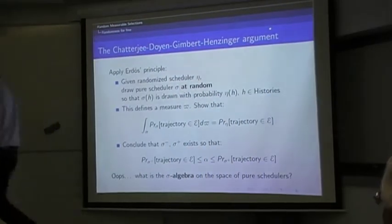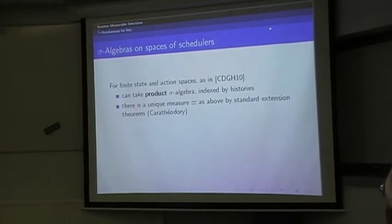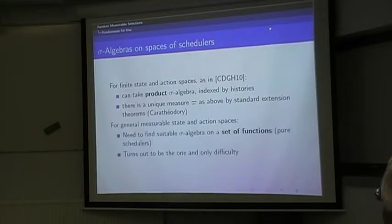In the finite state-and-action case, it's very easy. You've got something called the product sigma algebra. The scheduler is essentially just a tuple, and there's a unique measure pi as required above by standard extension theorems, and by that I mean the famous theorem by Carathéodory, which I won't recall by the way. For general measurable state-and-action spaces, you need to find a suitable sigma algebra on the set of pure schedulers, so it's a set of functions. You might say it's just a product sigma algebra. I beg to differ.